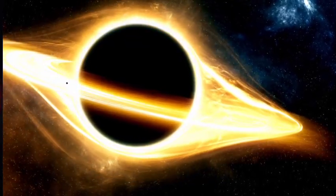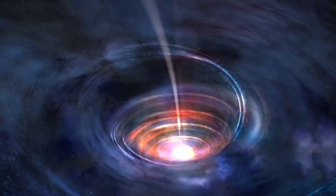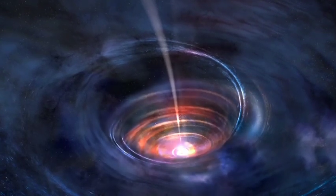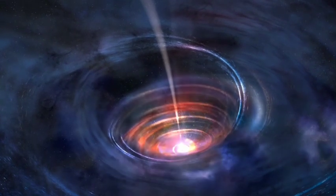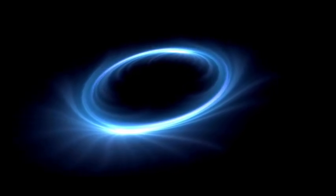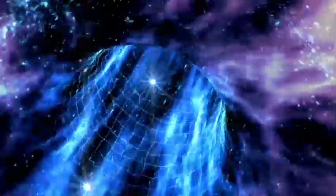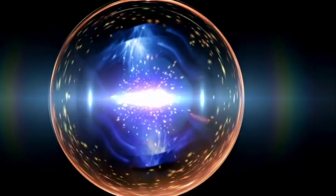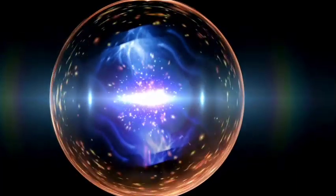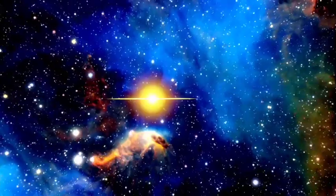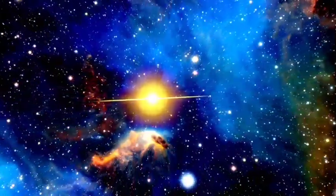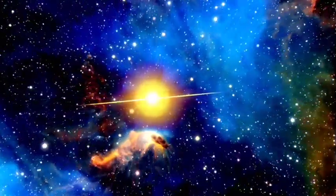Will the supernova affect Earth? The good news is that Betelgeuse is too far away, about 600 light-years, to pose any direct threat to Earth. While the explosion will be spectacular, it is unlikely to have harmful effects on our planet. However, if Betelgeuse were closer, within about 50 light-years, its supernova could release a dangerous amount of gamma-ray radiation, which could potentially strip away Earth's ozone layer and disrupt ecosystems. But at 600 light-years away, the explosion will be more of a breathtaking celestial event rather than a danger.